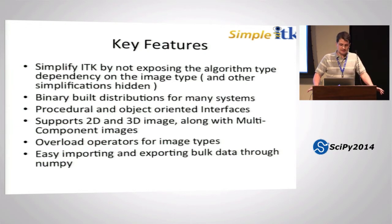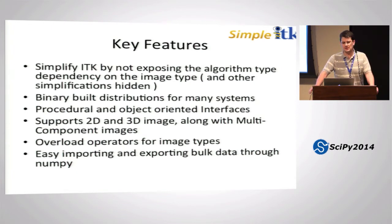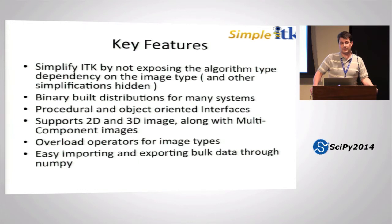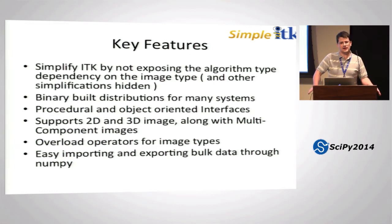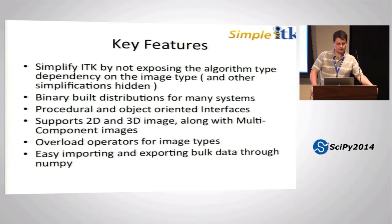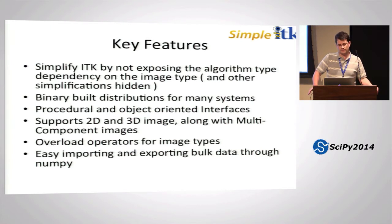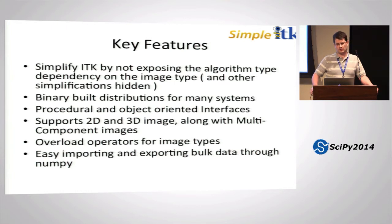Key features of Simple ITK include simplification of many ITK features, making algorithms that don't explicitly depend on image types, and hiding complexity so things work smoothly like other SciPy packages. We provide binary distributions for many systems, working with system Pythons that are ABI compatible with Python.org — though not with Enthought, Canopy, or Anaconda distributions. Filters have both a procedural and object-oriented interface, and almost all algorithms support 3D along with 2D, with many also working on multiple component images.